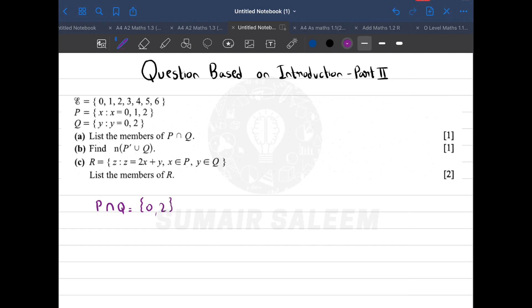Then it says find P complement union Q. How will you get P complement? All elements that are not present in P but present in universal set. So it's going to be 3, 4, 5, and 6.